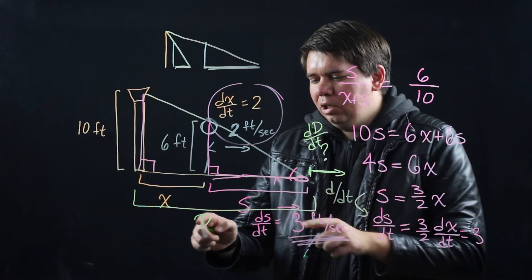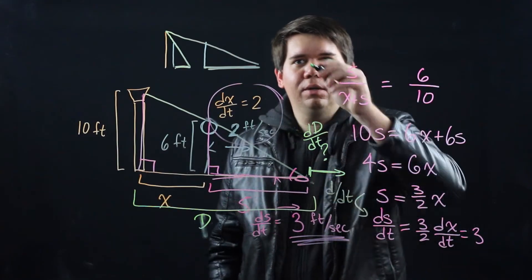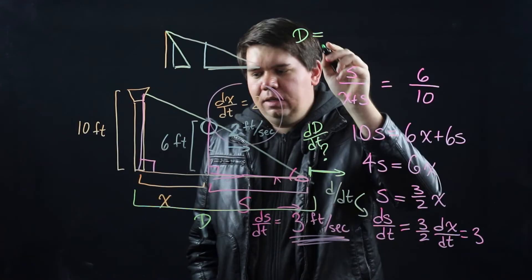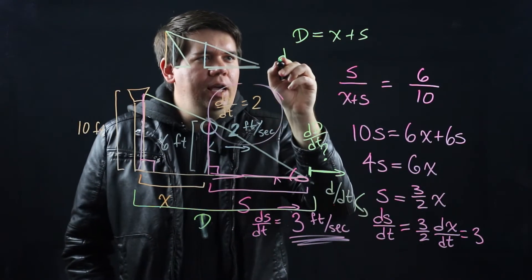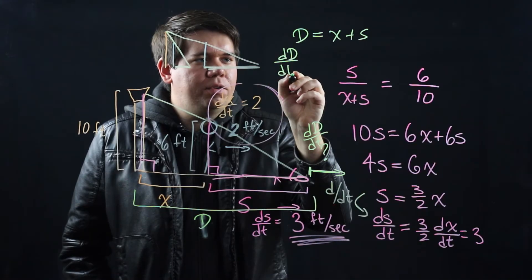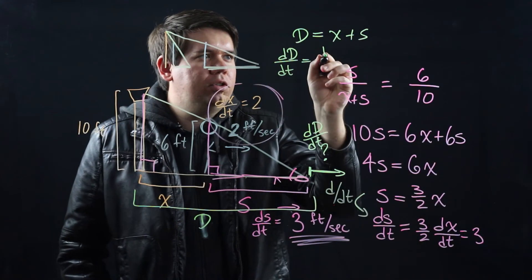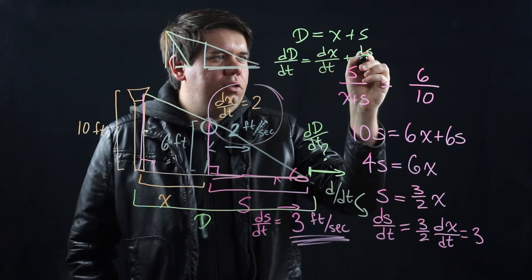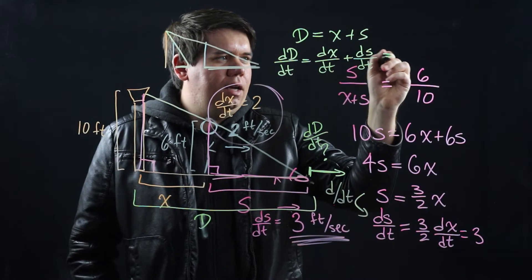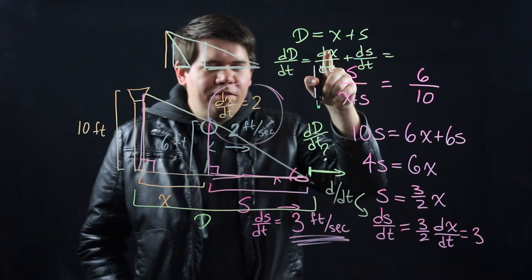I need to do something a little bit different. How is big D related to the quantities I already know? Well big D is just x plus s. So the change in big D over time should just be equal to the change in x over time plus the change in your shadow length over time. And then you can say, well we already solved that.